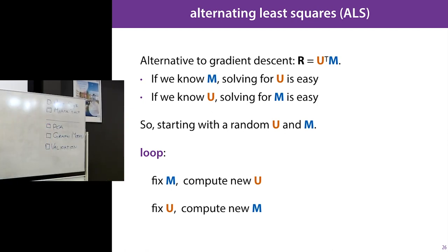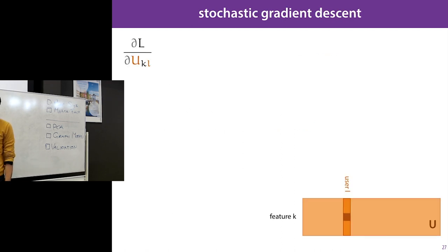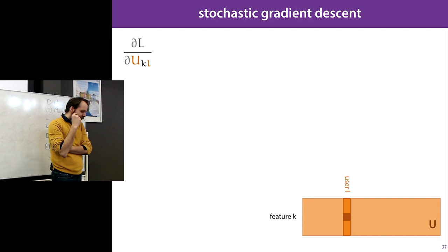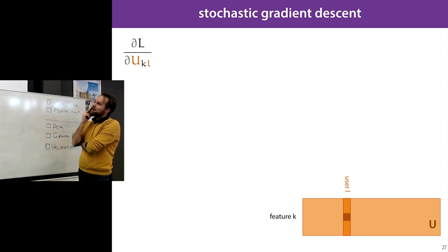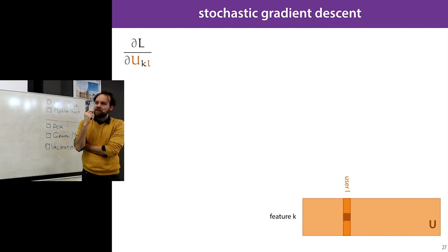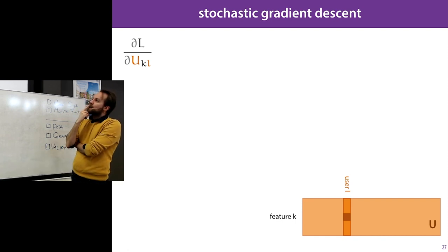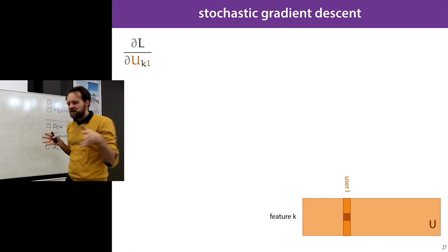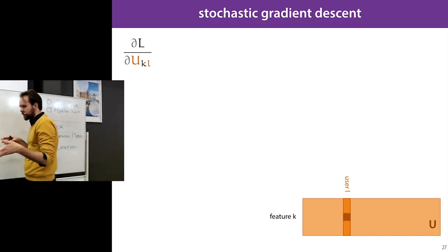We'll look in more detail at gradient descent, which is more straightforward: we have an error function and can compute its gradient. Let's have a quick look at what those gradients are to understand how the embeddings are updated as we learn.